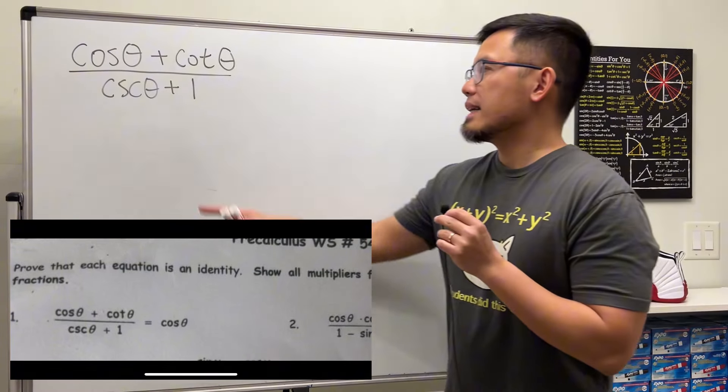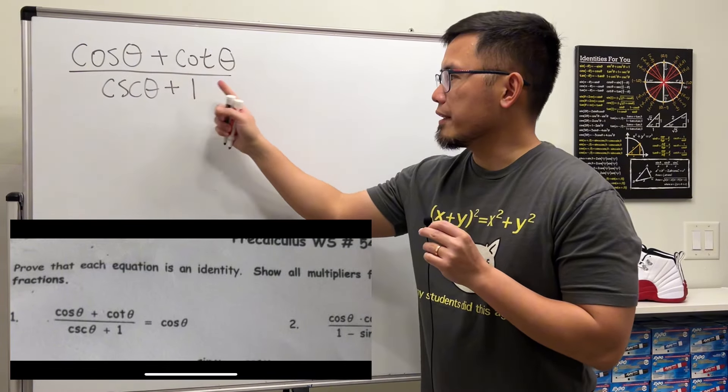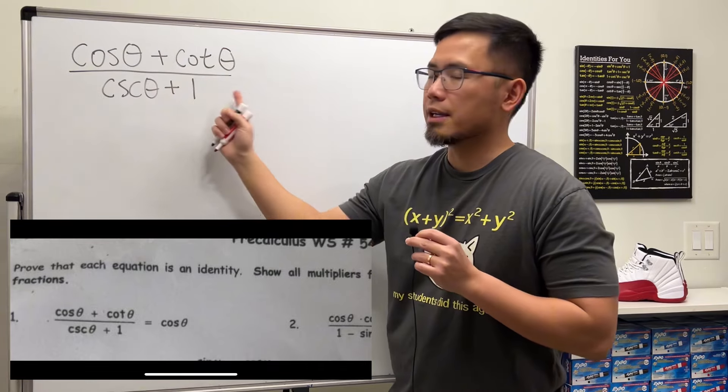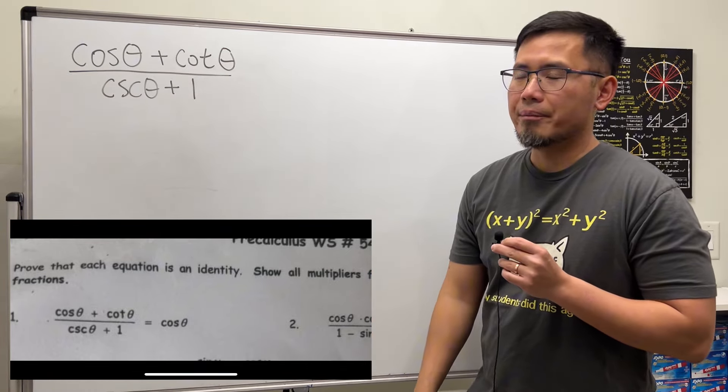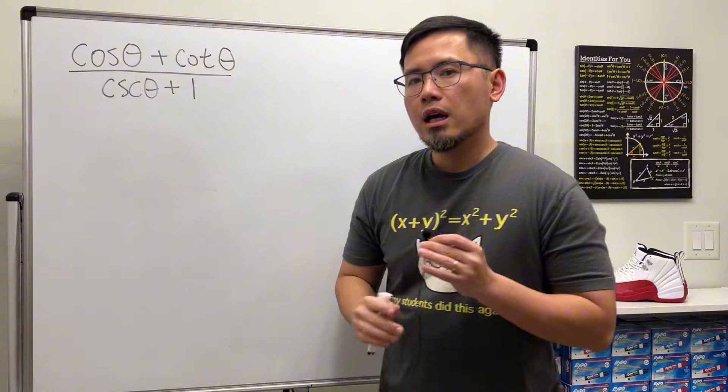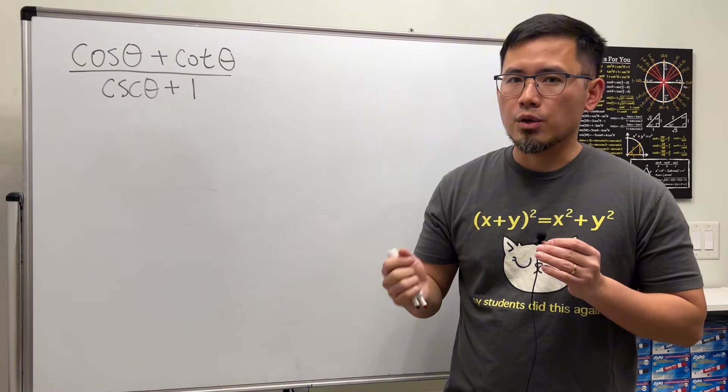We are going to show that cosine theta plus cotangent theta over cosecant theta plus 1 equals cosine theta. Starting from this side, let's change everything in terms of cosine and sine.